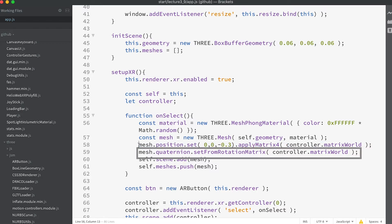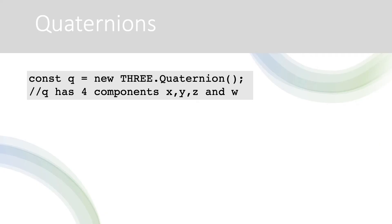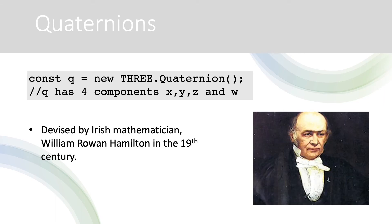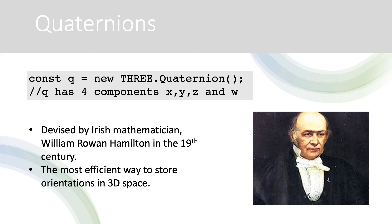We also set the orientation of the mesh using the setFromRotationMatrix method of a quaternion. If you're new to 3D, you might be unfamiliar with quaternions. A quaternion is a four-component mathematical entity that can be used to store orientations. Now is not the time for a long explanation of rotations in 3D — it's a tricky subject. Suffice to say that Irish mathematician William Rowan Hamilton's invention of quaternions is now almost universally adopted as the most efficient method for storing orientations in 3D space.